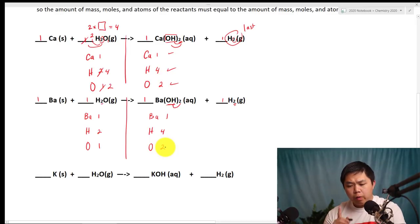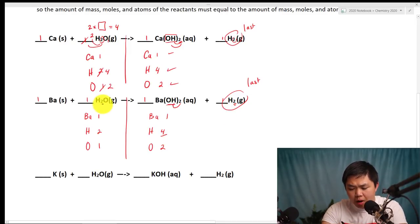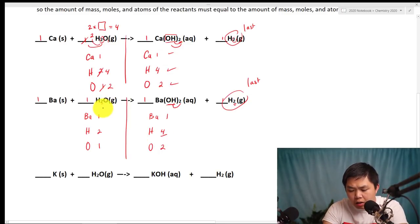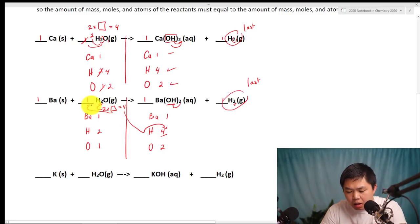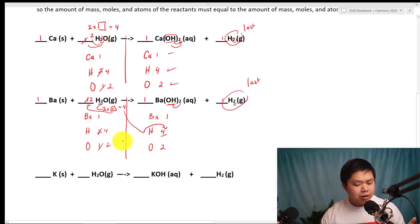We want to save the elemental hydrogen and oxygen last. So we focus on hydrogen: we have four on the product side and two on the reactant side. This is the only place that has hydrogen, so two times what number gives us four? The answer is two. So two times two gives us four, and two times one gives us two. It is balanced.